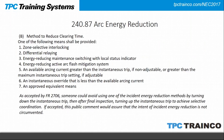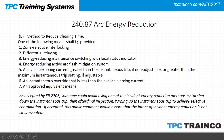Section 240.87 on arc energy reduction has been updated with two additional methods — numbers 6 and 7 — added to the existing five from 2014. Number 6 is an instantaneous override that is less than the available arcing current. This addresses a concern that someone could avoid using one of these methods by turning down the instantaneous trip and then turning it back up after final inspection to achieve selective coordination. An approved equivalent means is also permitted.